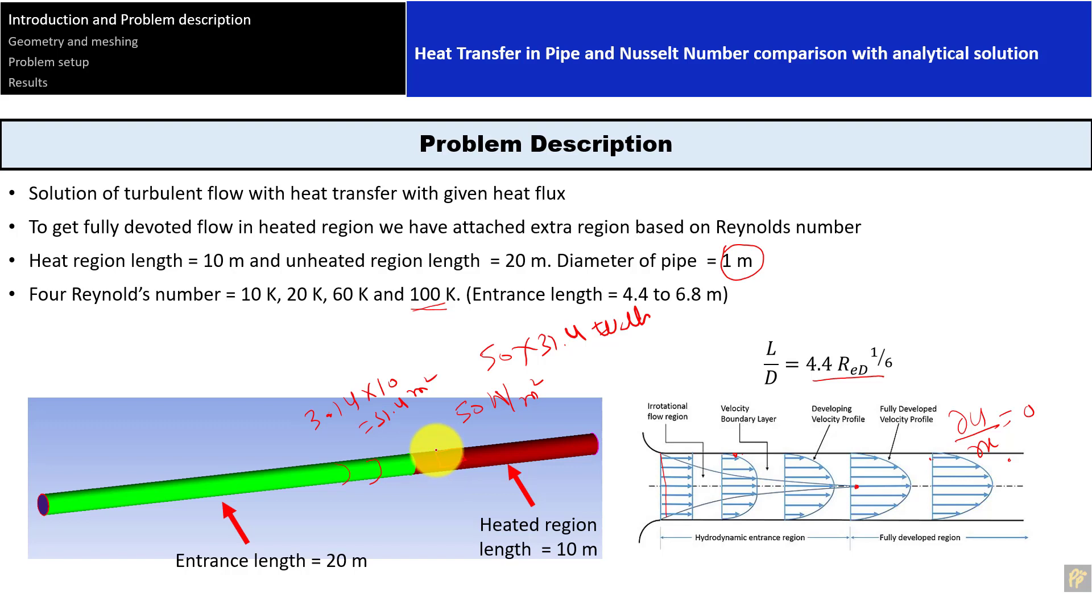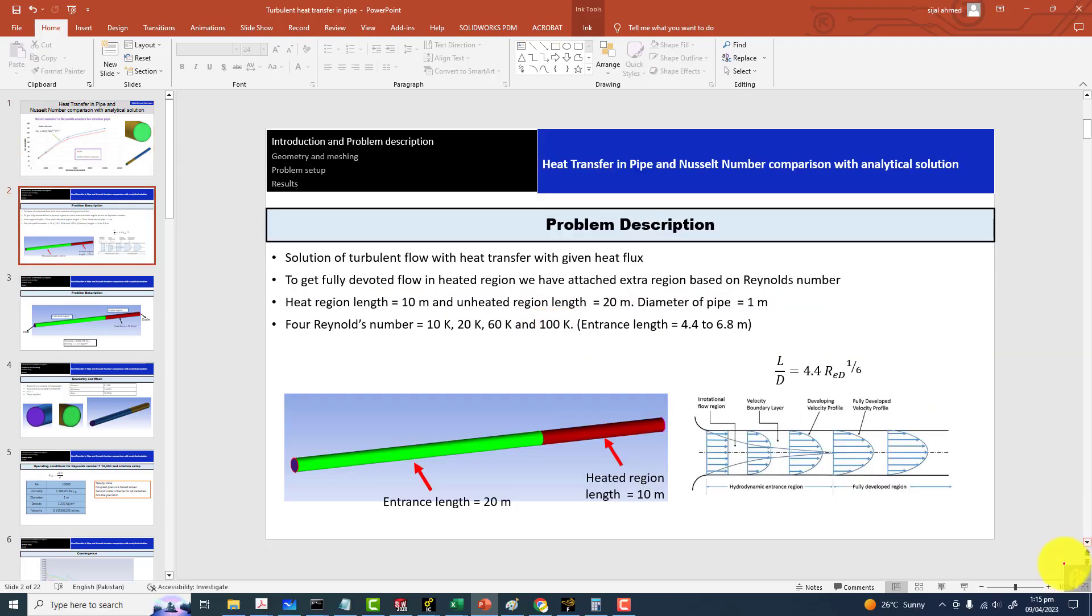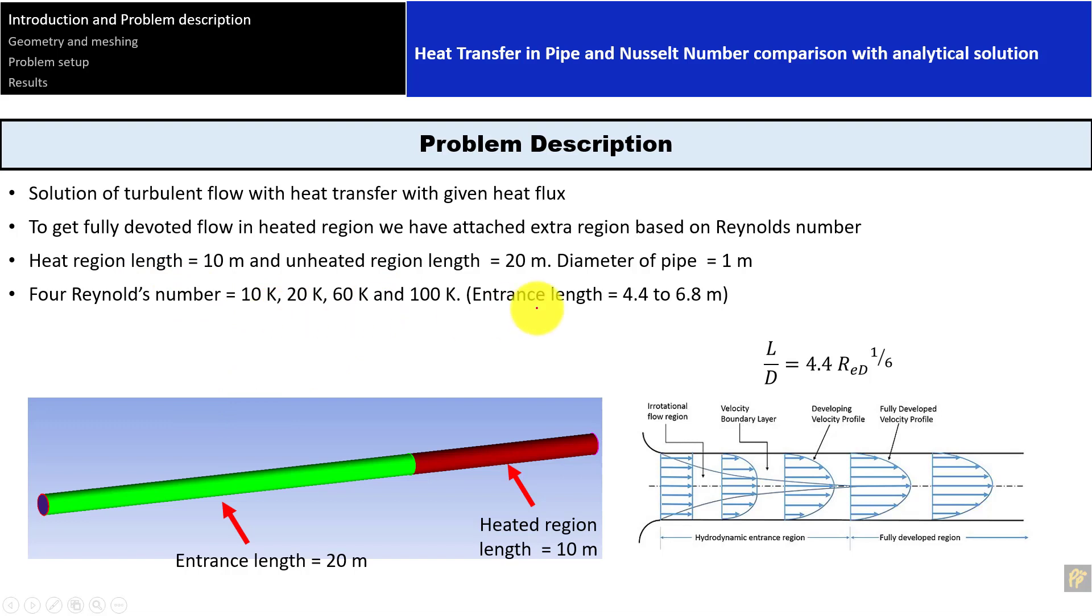This is the starting of the problem. We have the Reynolds number and the diameter of the pipe, which is 1 meter. From the entrance length, we found the unheated region and I doubled it or more than doubled it, making it 20 meters. Then I provided 10 more meters where the heat transfer or thermal boundary layer will start to develop. That's why I'll also get the values of thermal conditions or heat transfer coefficients almost at the end of the pipe, close to the outlet. This is the problem definition. From the heat transfer coefficient, we can find the Nusselt number values. This is what we're going to do in this whole workshop, and then compare with the correlation.